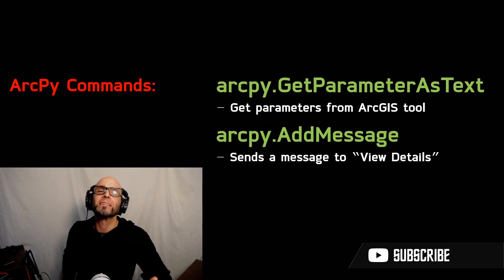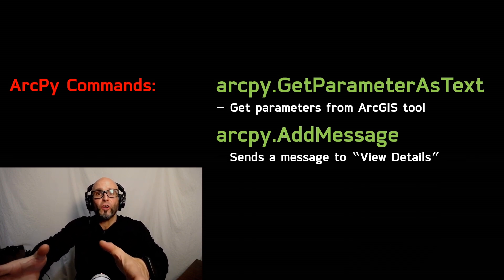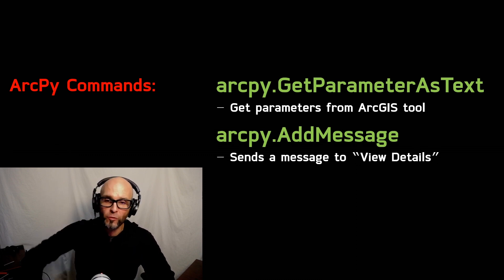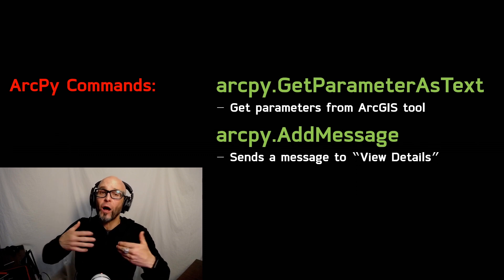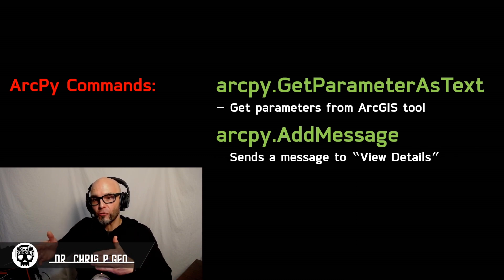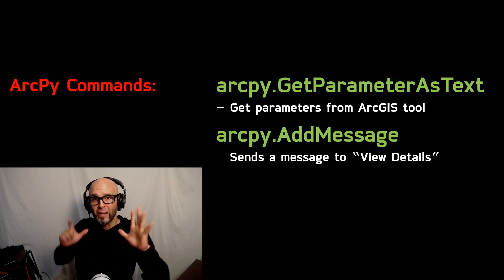We need two ArcPy commands. The first is GetParameterAsText — that's how we get the parameters from the ArcGIS tool; in this case, there is only going to be one. The second is AddMessage. I like to add a message because I like to remind myself what I'm actually doing with the tool. My more complex tools have many, many messages so I know what's going on while the code's running. There are only seven Python commands and two ArcPy commands.